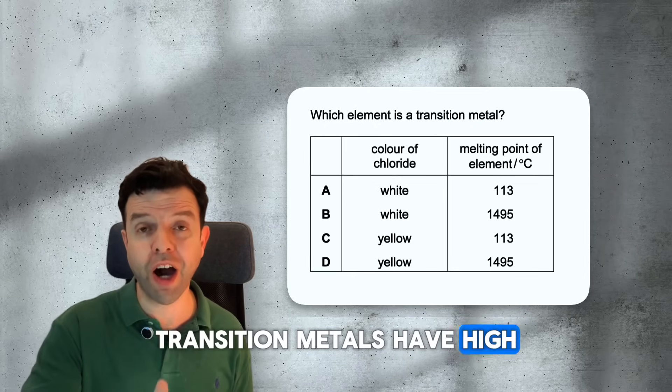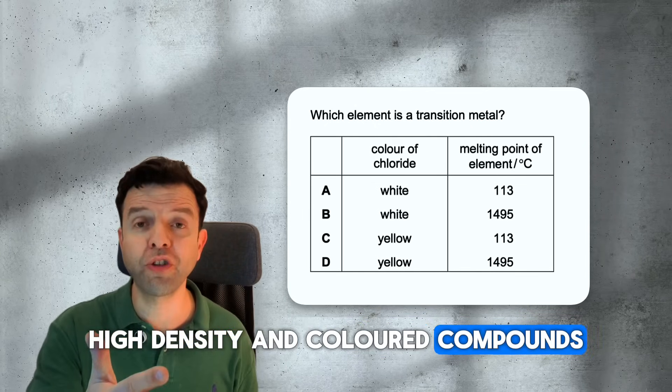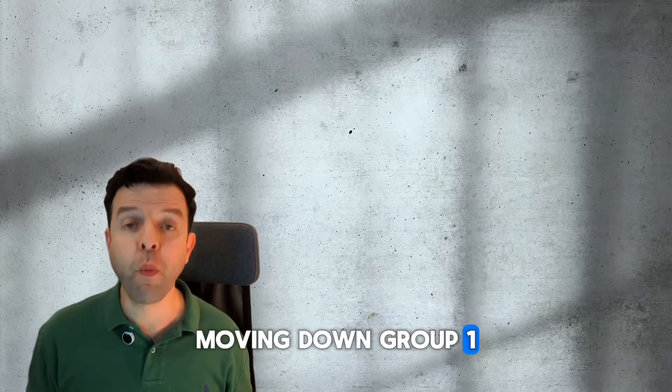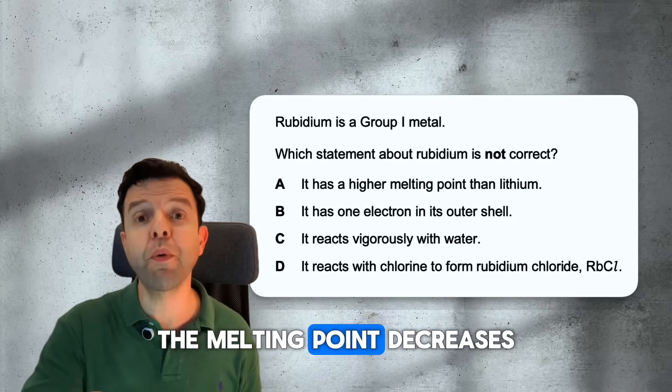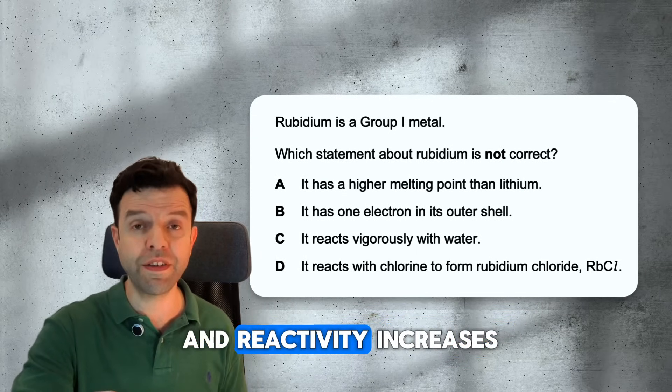Transition metals have high melting point, high density, and colored compounds. Moving down group one in the periodic table, the melting point decreases and reactivity increases.